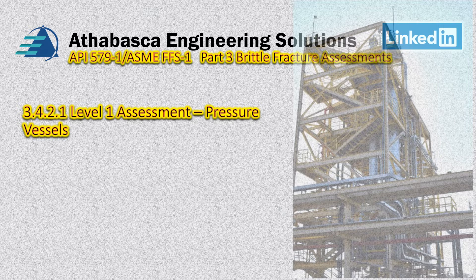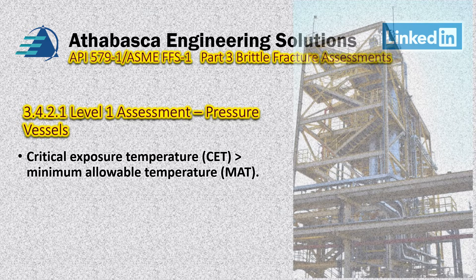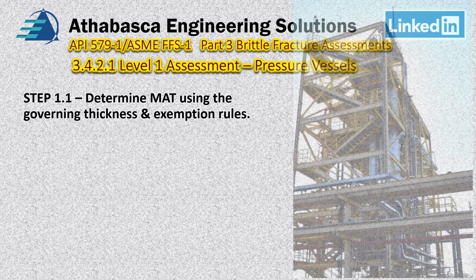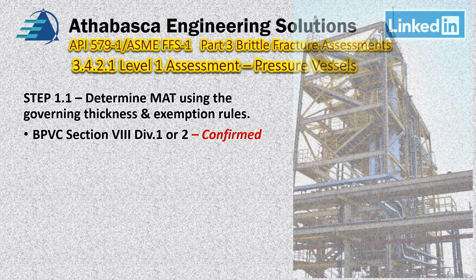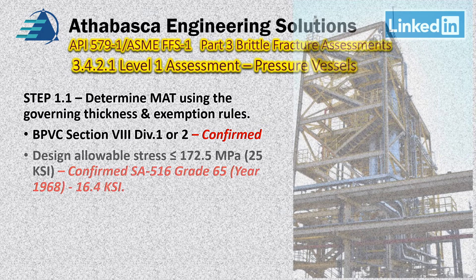When we start Level 1, we want to remind ourselves where we're trying to go: the critical exposure temperature given by the process team, the CET, must be greater than the minimum allowable temperature, the MAT, for that given component. In Step 1.1, we determine MAT using the governing thickness and exemption rules. We confirm we're following ASME Boiler Pressure Vessel Code Section 8, Division 1 or 2, and confirm the allowable stress is equal to or less than 172 MPa or 25 Ksi. SA-516 Grade 65 has an allowable stress of 16.4 Ksi, so we're good.